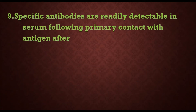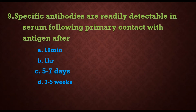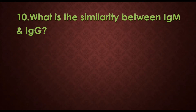Ninth question: specific antibodies are readily detectable in serum following primary contact with antigen after — options are: a) 10 minutes, b) one hour, c) five to seven days, d) three to five weeks. The answer is c) five to seven days. Specific antibodies are readily detectable in serum following primary contact with the antigen after five to seven days.